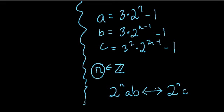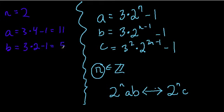So let's say n equals 2. If you plug it in, what does A equal? Well, A would equal 3 times 4, because n is 2, minus 1. That equals 11. B would equal 3 times 2, because 2 minus 1 is 1. 2 to the first power is just 2, minus 1. So that's 6 minus 1, which is 5.